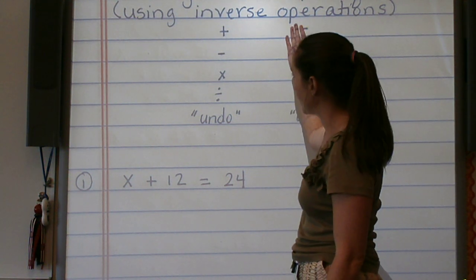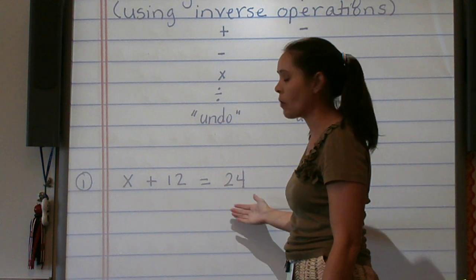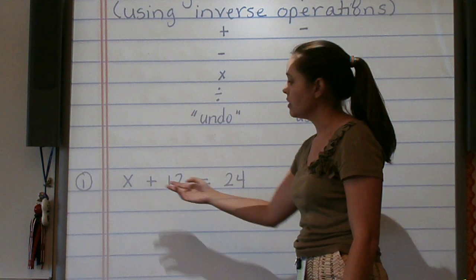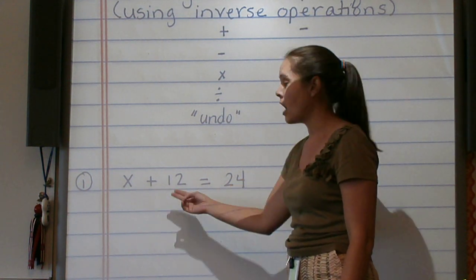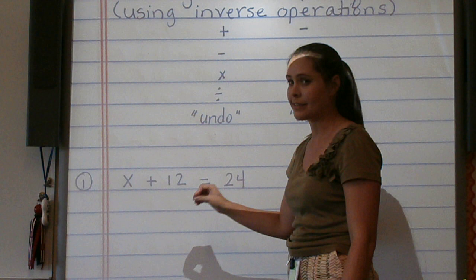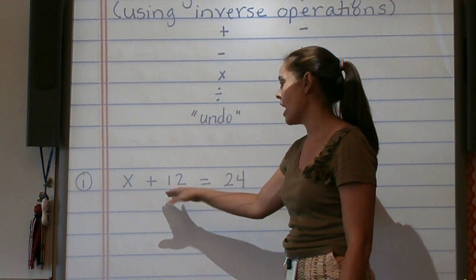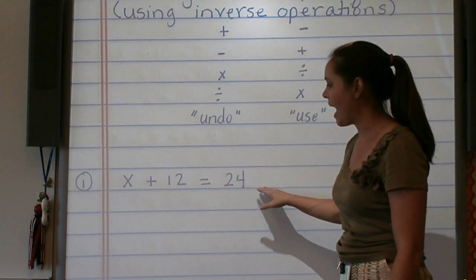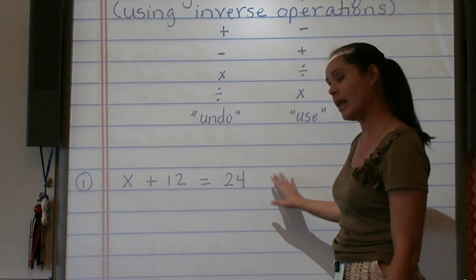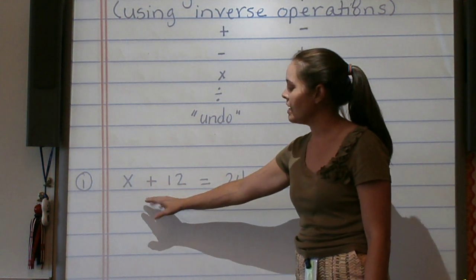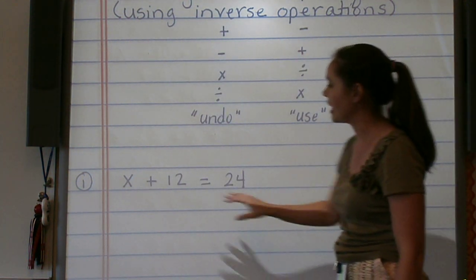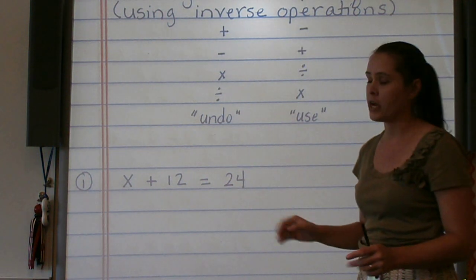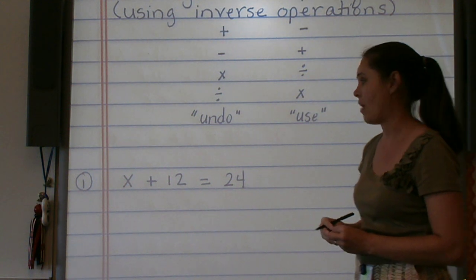However, when we look at solving equations, we need to show our work. So we're going to need to show that we're using our inverse operations to find x, not that we're just doing it in our head. And that's an excellent skill to be able to say what plus 12 equals 24. But remember, as we progress in math, our equations are going to become more complex. So understanding our rules for inverse operations and our rules for solving equations will make larger equations much easier to understand and how to solve them.